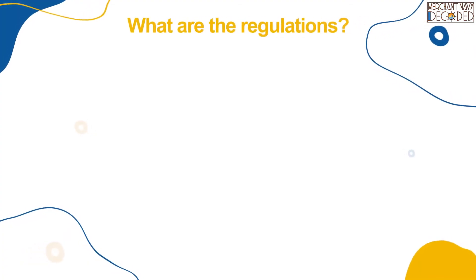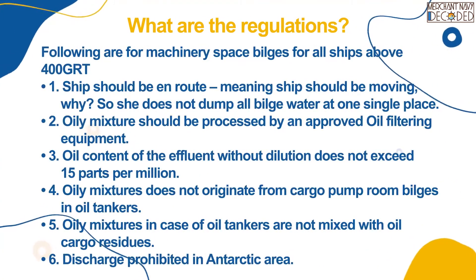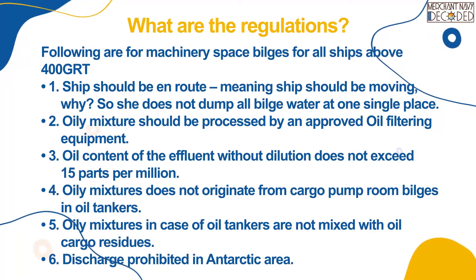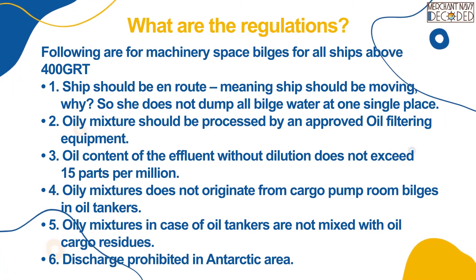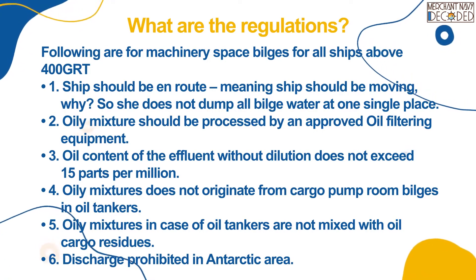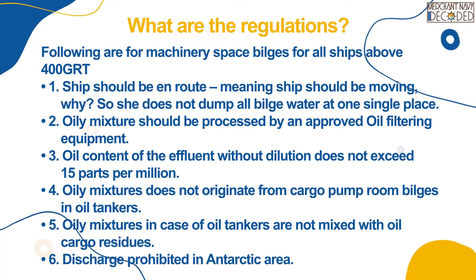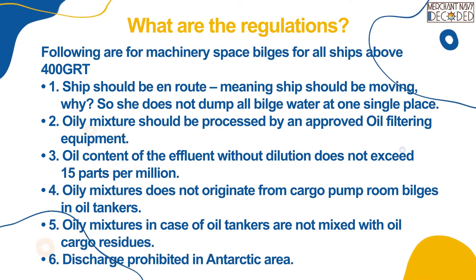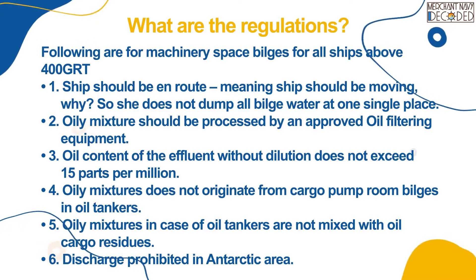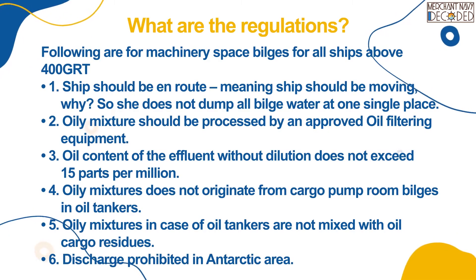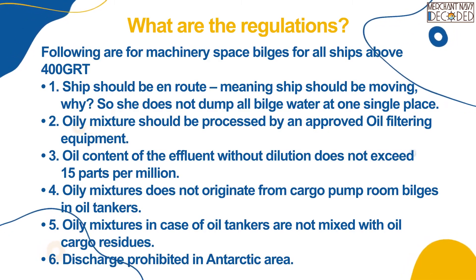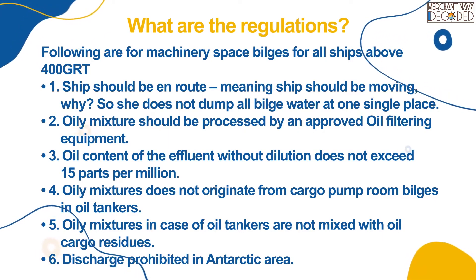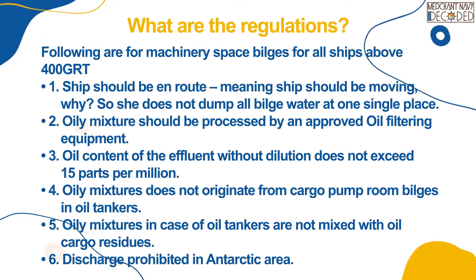What are the regulations? The following apply for machinery space bilges for all ships above 400 GRT. 1. Ship should be en route, meaning the ship should be moving — so she does not dump all bilge water at one single place. 2. Oily mixture should be processed by an approved oil filtering equipment. 3. Oil content of the effluent without dilution does not exceed 15 parts per million.